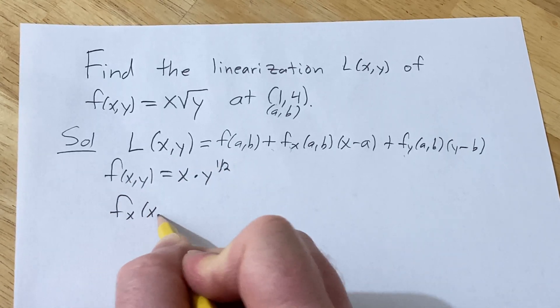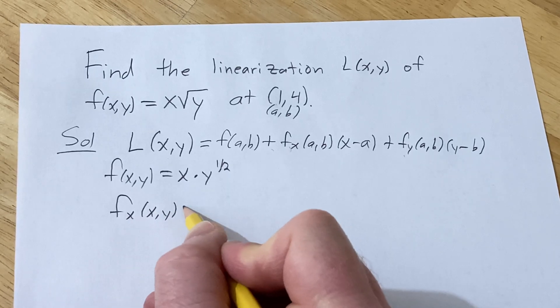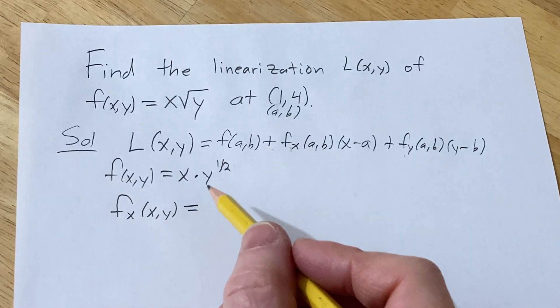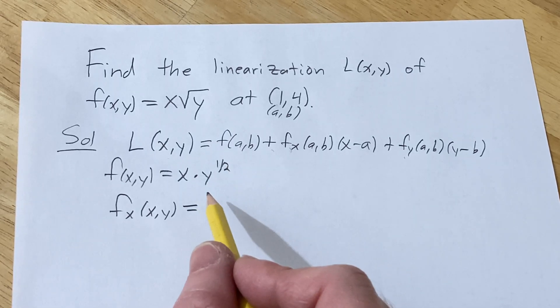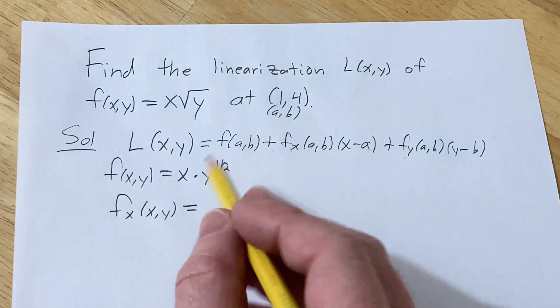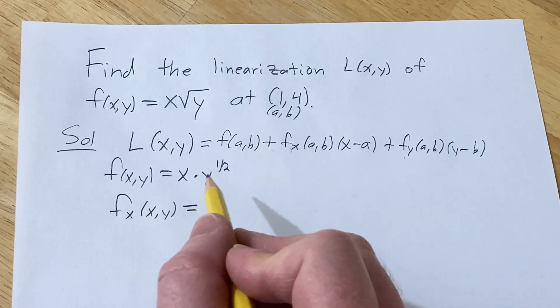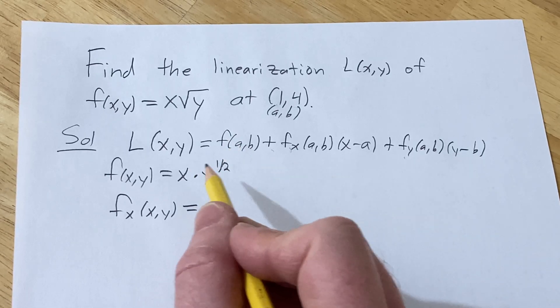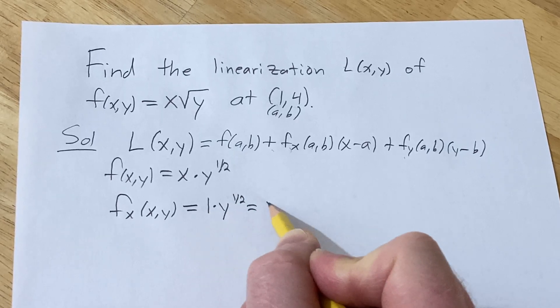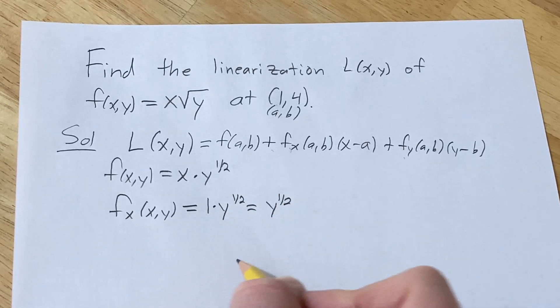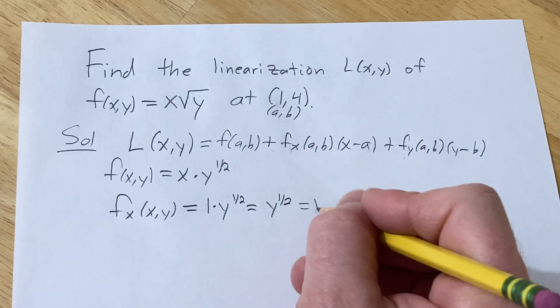So the partial with respect to x: basically whenever we're finding any partial derivative with respect to a variable, we treat all the other variables as constants. So in this particular case, we're going to treat the y as a constant. So the derivative of x is 1, and then you're just left with this. So we just have that, which is just the square root of y.